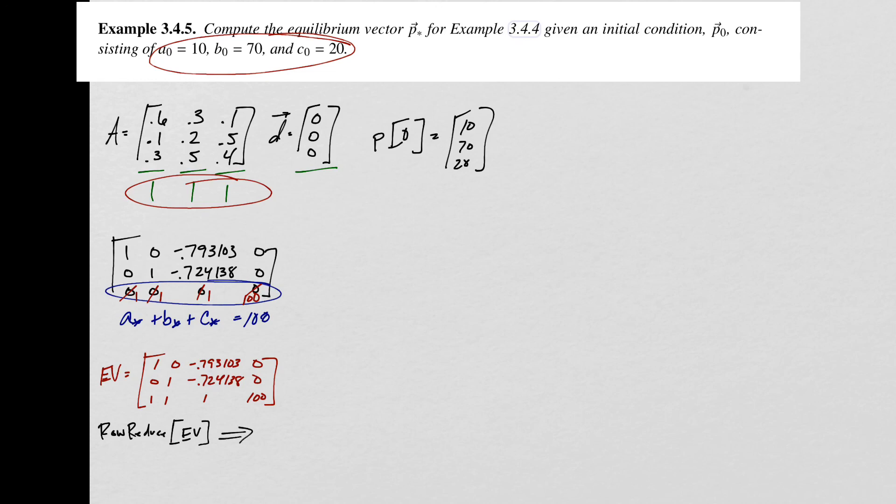When I do that, the output I get should look something like this. There's my new augmented matrix, or my row reduced matrix. Since I see this identity matrix here on the left-hand side of the augmented matrix, I know that I've got a unique solution. This says that A star is equal to 31.5068, B star is equal to 28.7671, and C star is equal to 39.726. This right here is my equilibrium vector for the initial conditions we're given in problem 3.4.5.